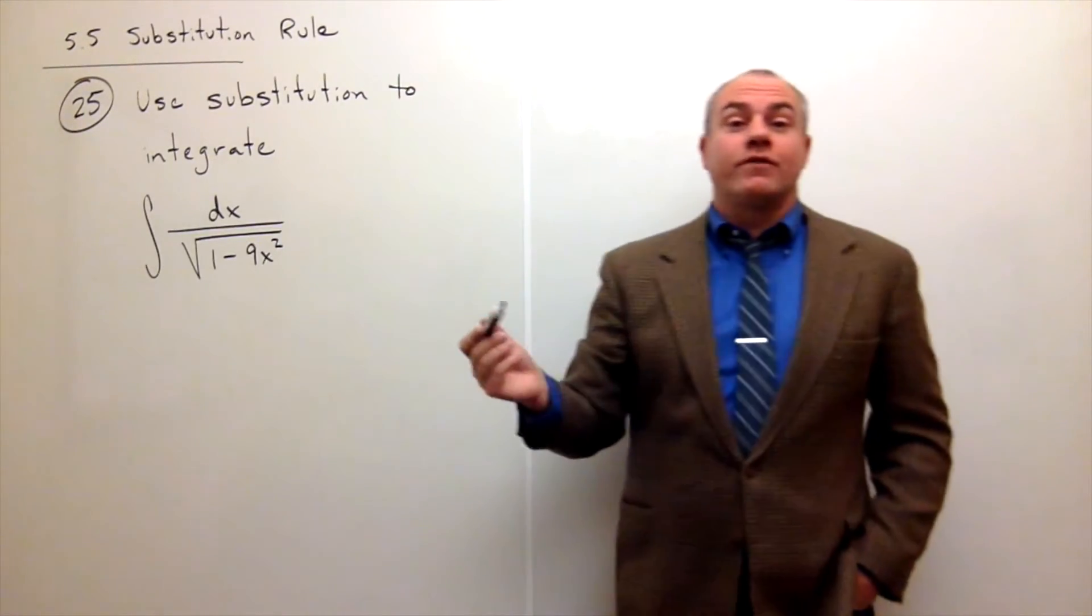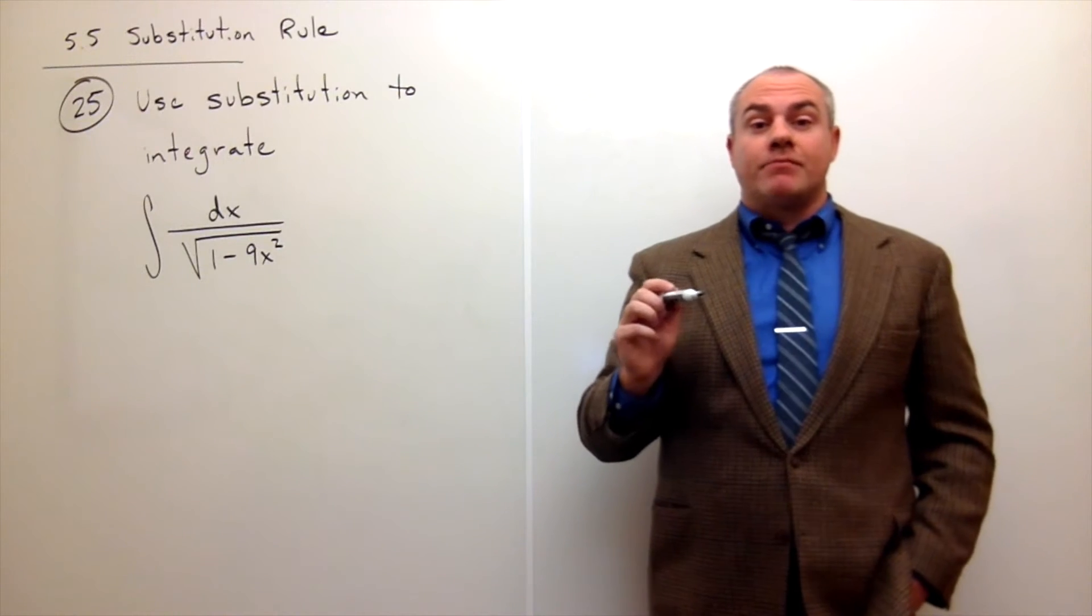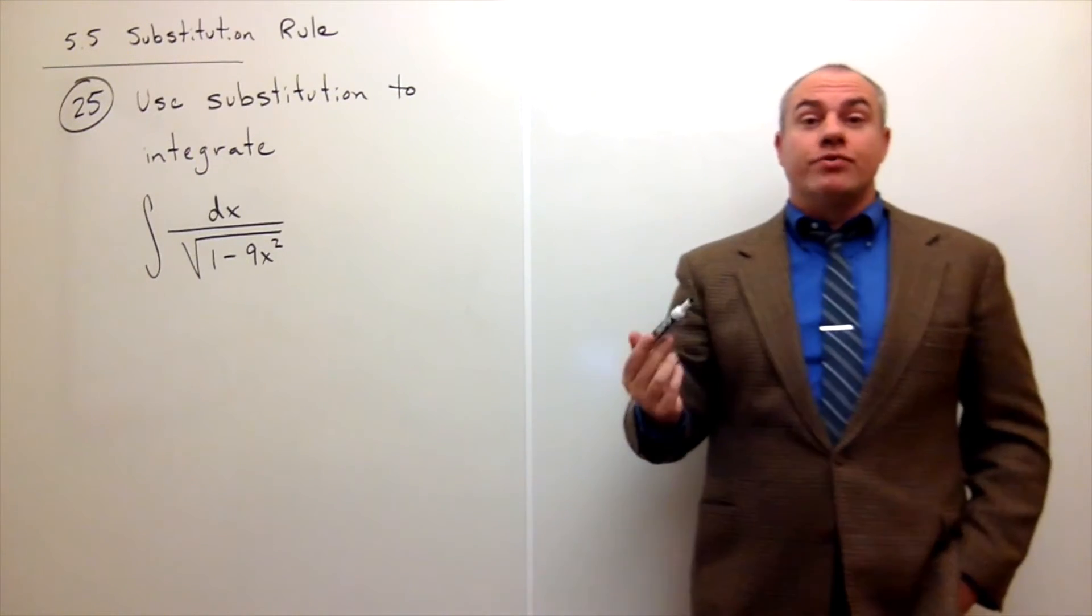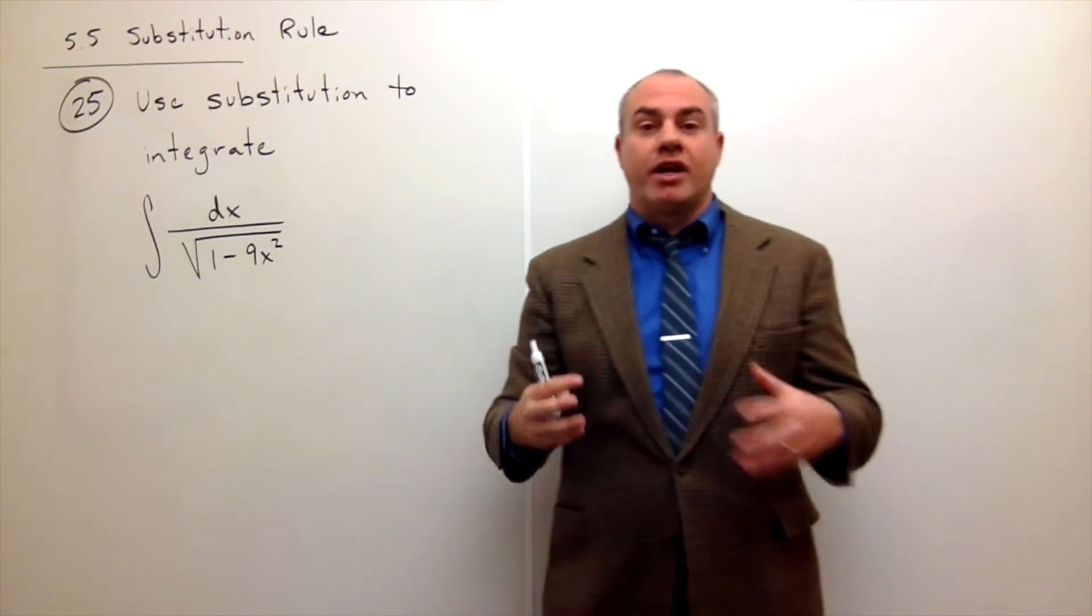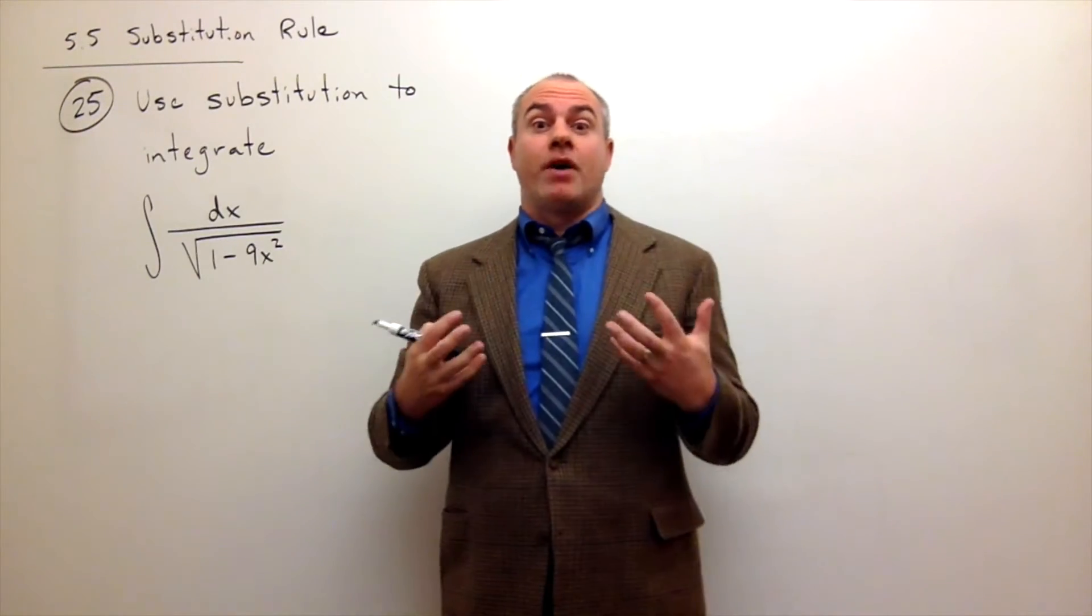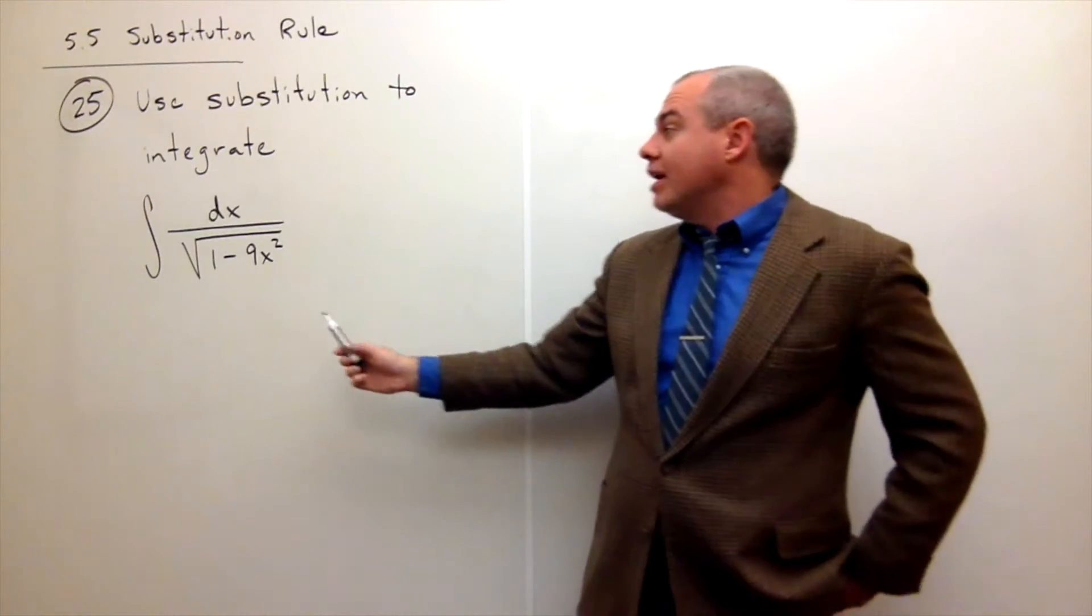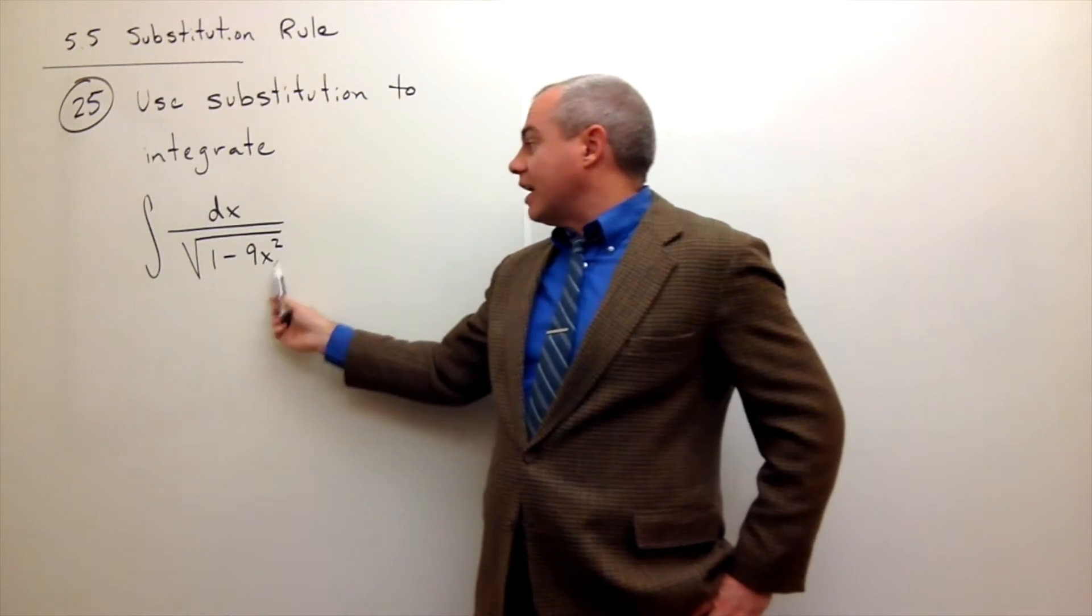As I've told you in some previous problems, what we're usually looking for when we make a u-substitution is we're looking for a function within a function. Something does just jump right out at us on this problem and that is the 1 minus 9x squared.